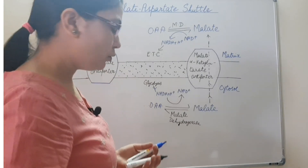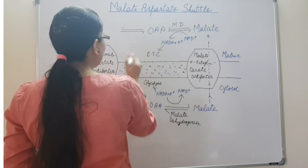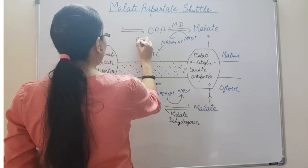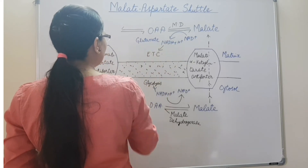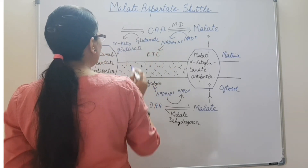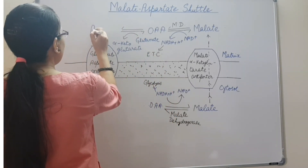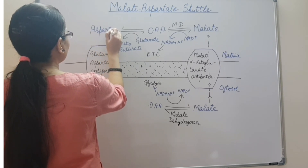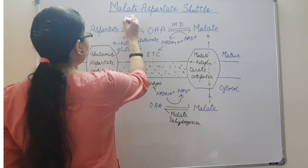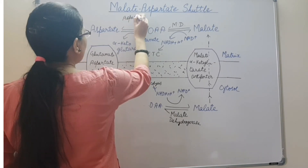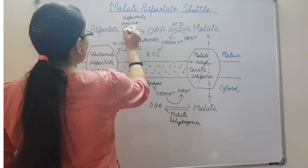Now, what happens to this oxaloacetate? The oxaloacetate takes an amino group from glutamate, which is also present in the matrix. Glutamate is converted into alpha-ketoglutarate, and oxaloacetate is converted into aspartate. This reaction is catalyzed by the mitochondrial aspartate aminotransferase.